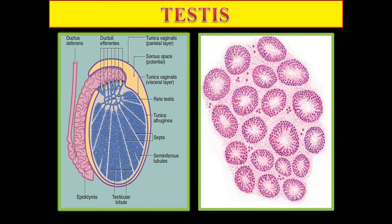The testes is composed of testicular lobules, which are separated by septa. The testicular lobule is composed of seminiferous tubules. In between the seminiferous tubules there are interstitial cells of Leydig.